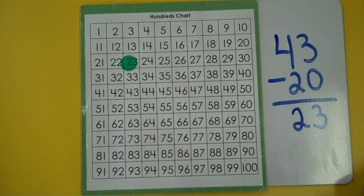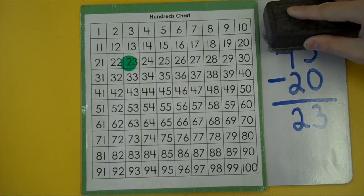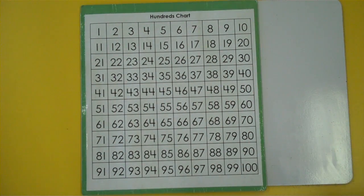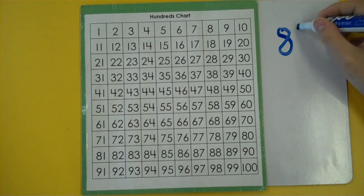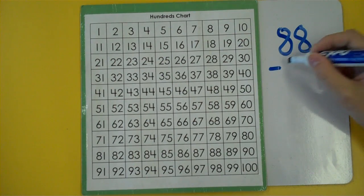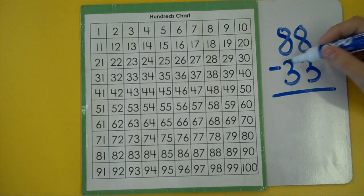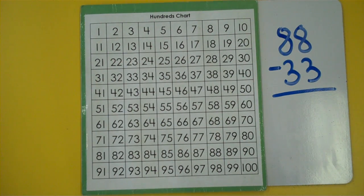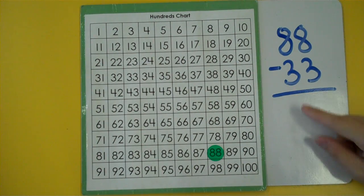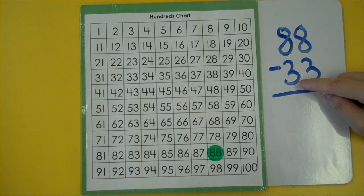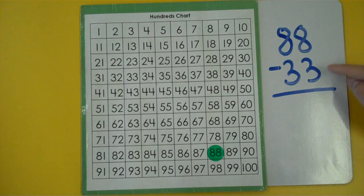Now let's put the two together: skip counting by tens and counting back by ones. 88 take away 33. I'm going to start at the 88 and I'm going to count back by tens first and then count back by ones.